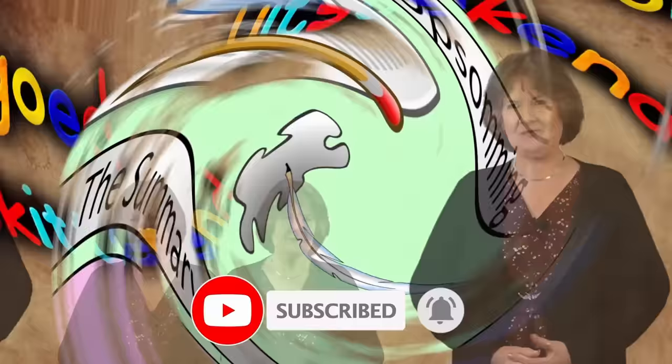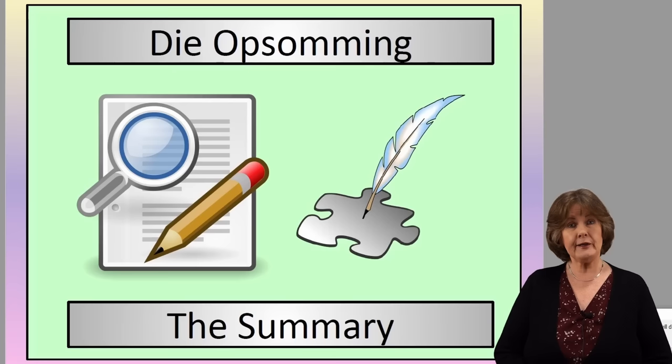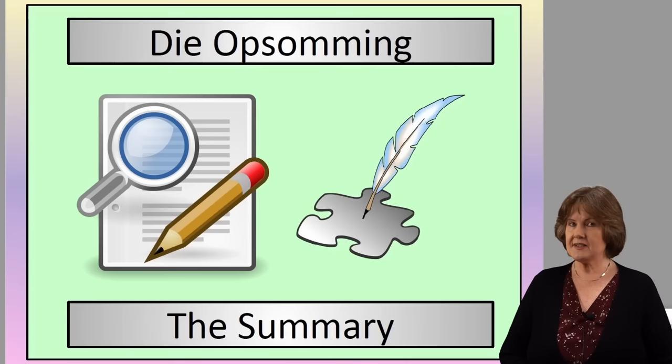The Opsomen in Afrikaans is very different to English. You must please listen carefully. In first additional language, we don't write it in paragraph form — you write it in point form. But listen carefully, it can be very, very easy if you follow these instructions.